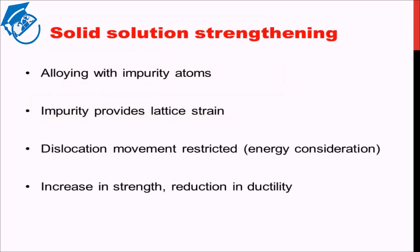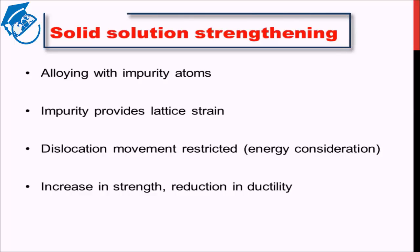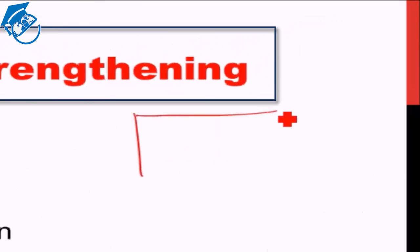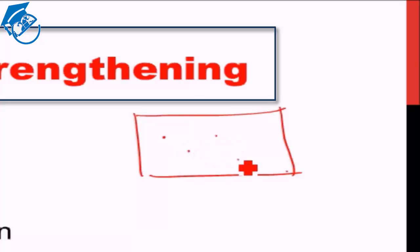The second method to increase strength is known as solid solution strengthening. A solid solution is basically when you have a metal and you alloy it with a different kind of atom — alloying with impurity atoms. For example, if you have iron and alloy it with carbon atoms, there will be carbon atoms spread throughout the iron matrix.